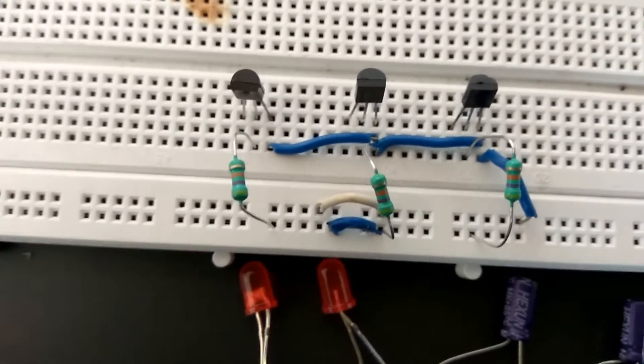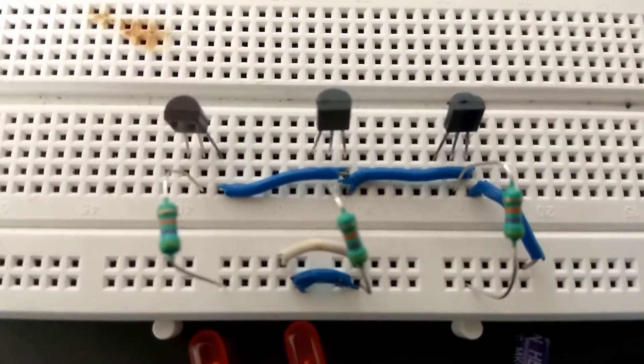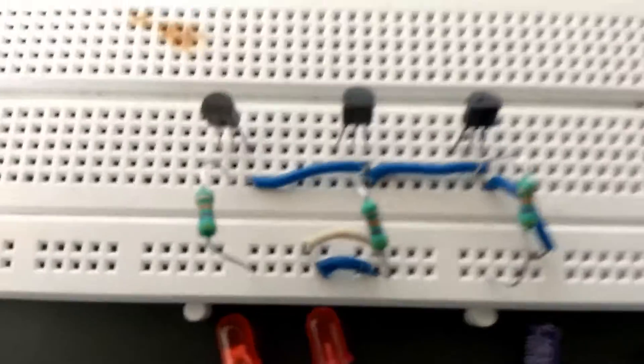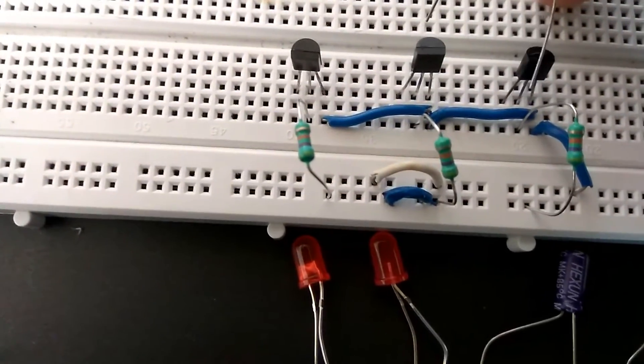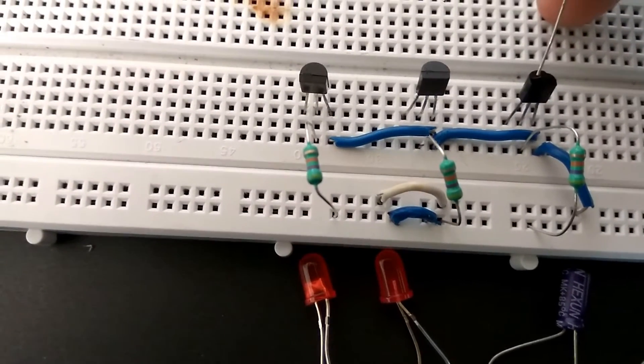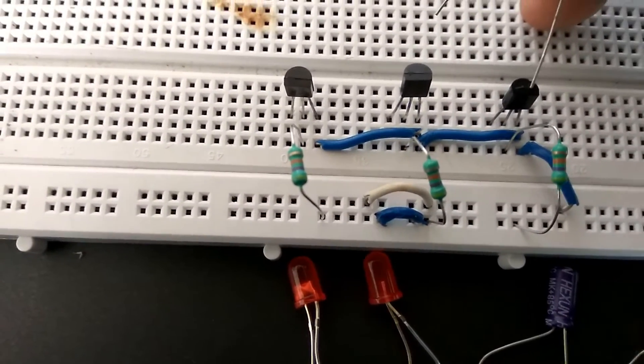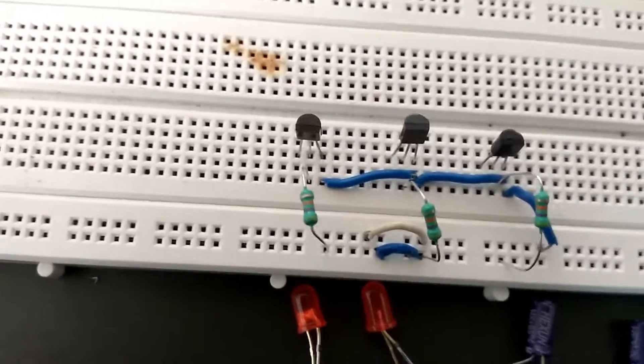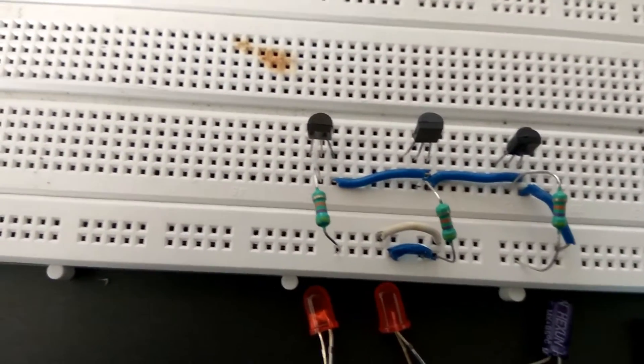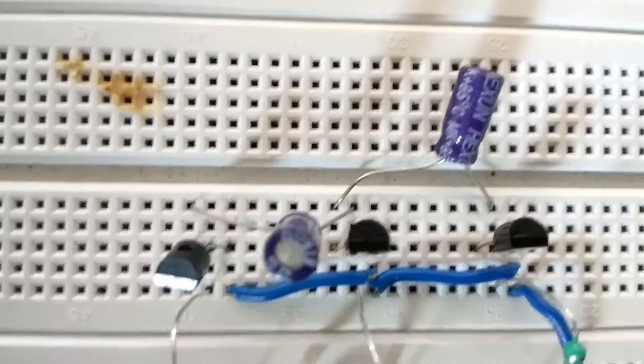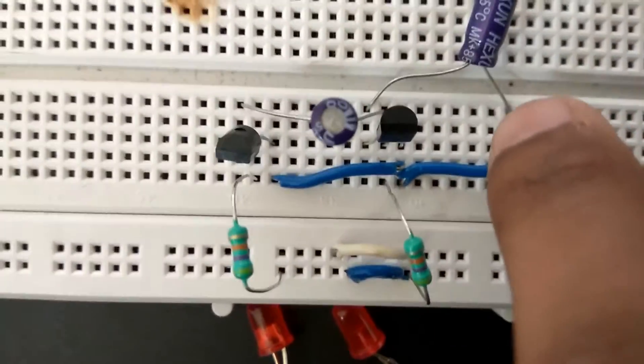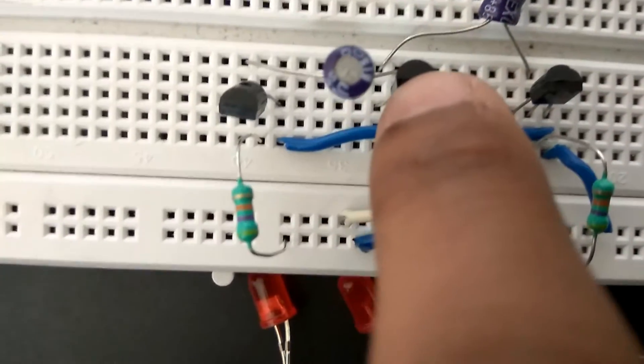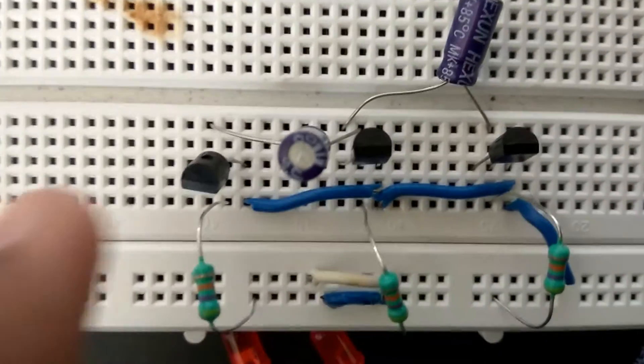Now connect two capacitors with their negative terminals connected to the base of one transistor and their positive terminals connected to the collector of the other transistor. Negative terminal to the base, positive terminal to the collector of the opposite transistor.